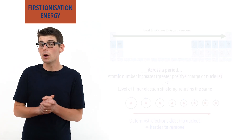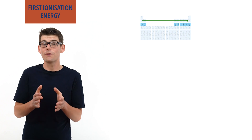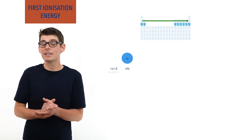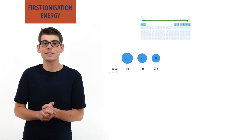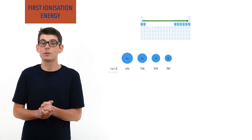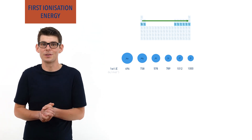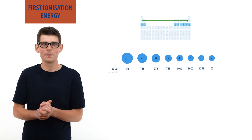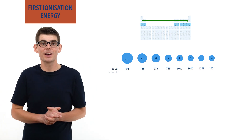For example, across period 3: sodium has a first ionization energy of 496 kJ/mol, magnesium 738, aluminium 578, silicon 789, phosphorus 1012, sulfur 1000, chlorine 1251, and argon 1521 — showing a clear trend of increasing first ionization energy.